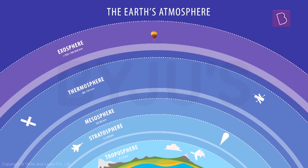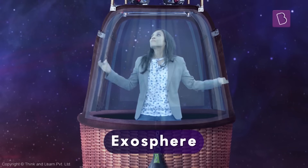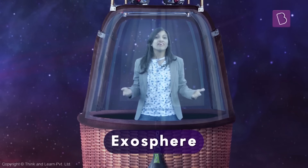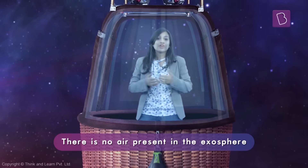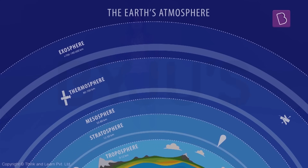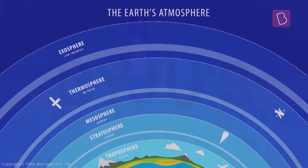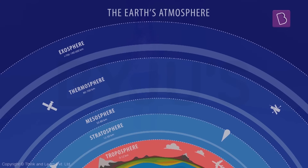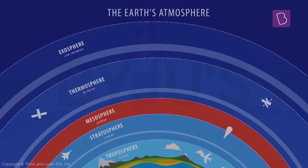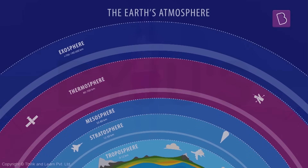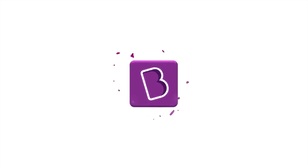After this layer is the exosphere, which is basically outer space — there is little or absolutely no air over here. So the four layers of the atmosphere are: troposphere, stratosphere, mesosphere, and thermosphere.